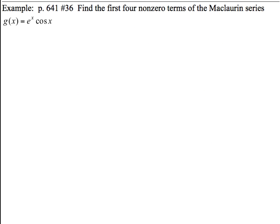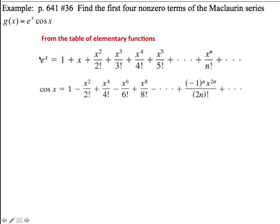This next example is to find the first 4 non-zero terms in the Maclaurin series. We notice we have two elemental series multiplied together. Here's e to the x and here's cosine x from that elementary function table. And so we are going to do an old-fashioned FOIL.